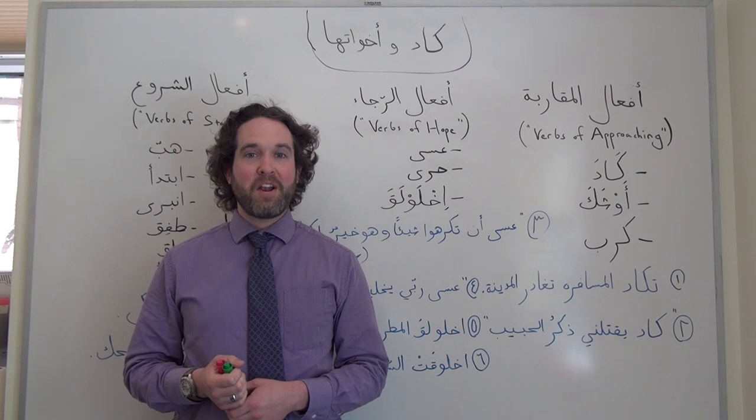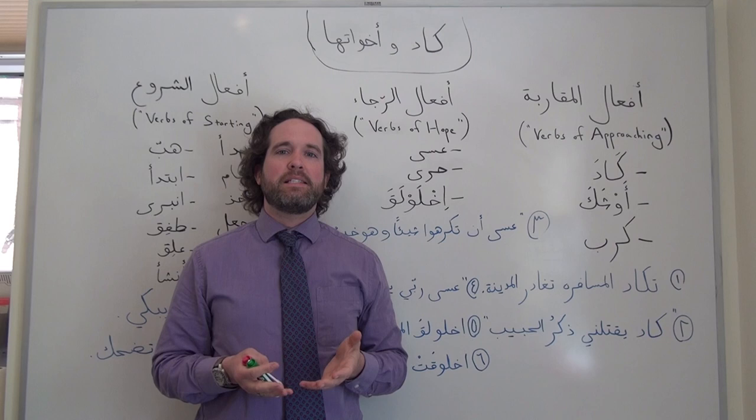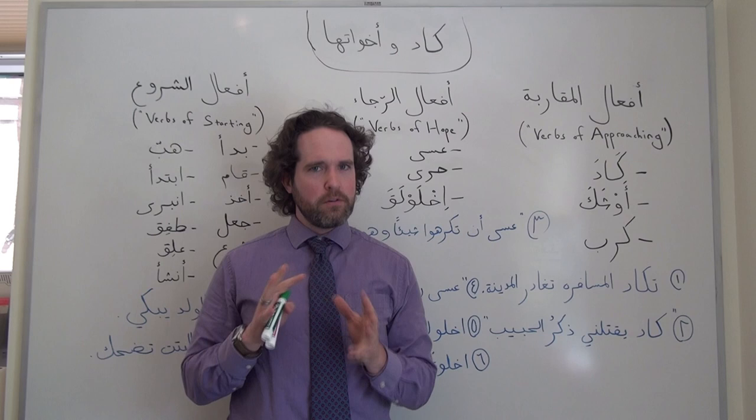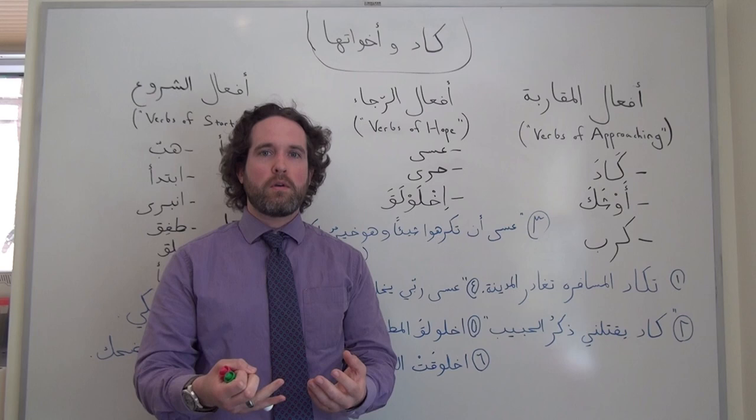Sabah al-kheer. Right now I'm going to talk about a special category of verbs, which we call in Arabic كَادَ وَأَخُوَاتِهَا, or كَادَ and its sisters. This is a category of verbs that includes several synonyms, meaning either to be about to, or on the verge of, to almost do something, to hope for, or that something happens, and also to start or to begin.